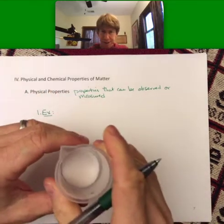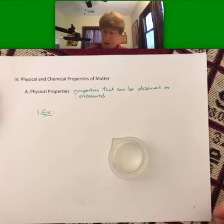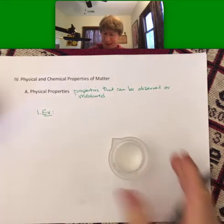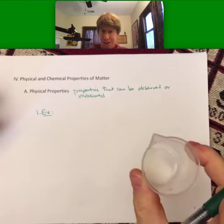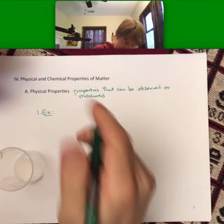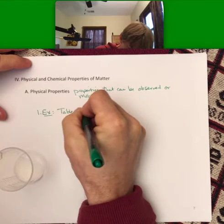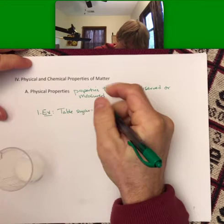For example, I have some table salt here, or sorry that's not the salt, that's the sugar. I have some sugar. If I look at this, I can see that the sugar is, let's see, it's called table sugar. It is white.